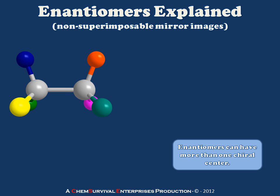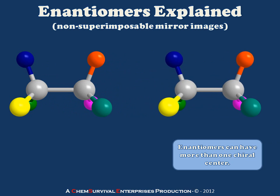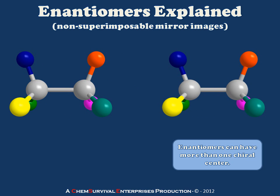Enantiomers need not have only one chiral center — it's possible to have an enantiomer with many chiral centers. In this example, we have one with two chiral atoms, both shown in gray: the first having blue, yellow, and green substituents, and the second having orange, teal, and magenta substituents. If I take a copy of this molecule and invert both chiral centers by exchanging the blue and green and exchanging the orange and teal substituents, I've created a compound which is a mirror image.